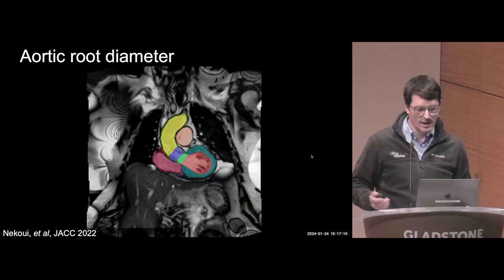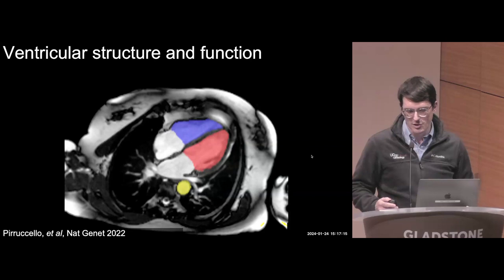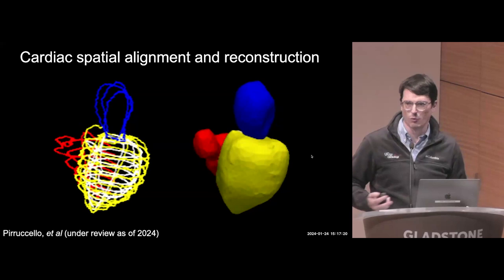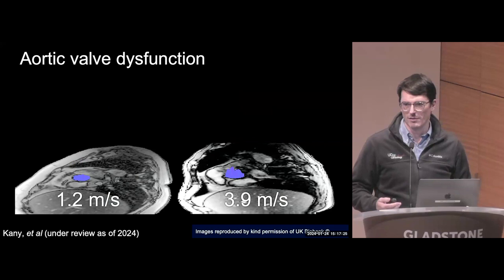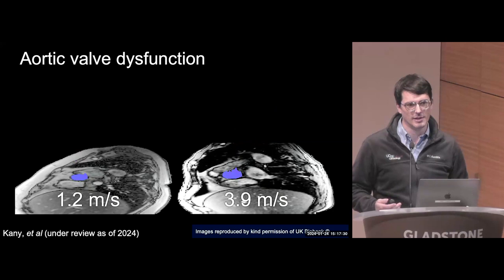The work I've done so far has focused on all aspects of structural heart disease: aortic aneurysm, aortic root diameter, ventricular structure and function, and how to pull these things together, reconstruct a three-dimensional or four-dimensional heart, and think beyond just structure to function. For example, we're looking at velocities across the aortic valve and dynamic flows.